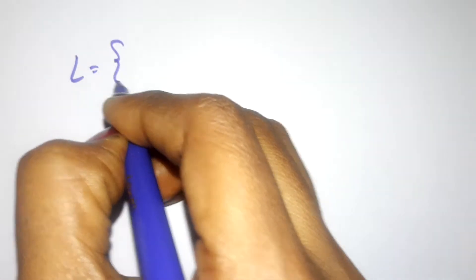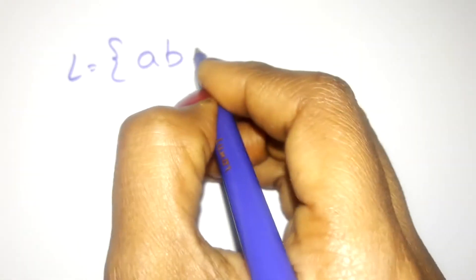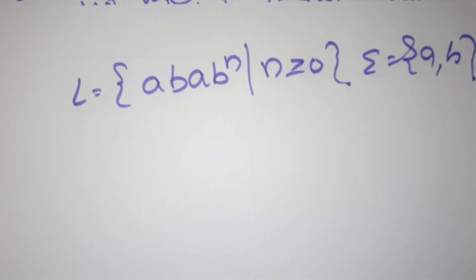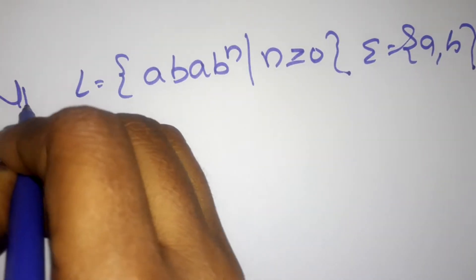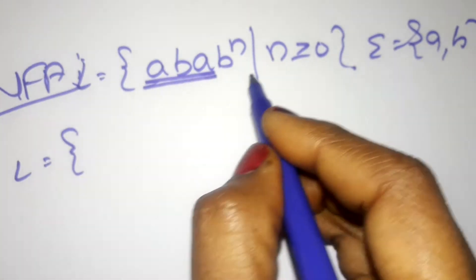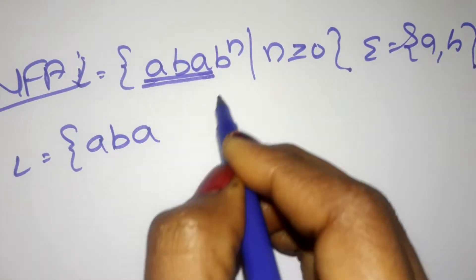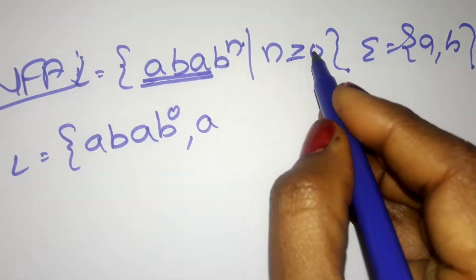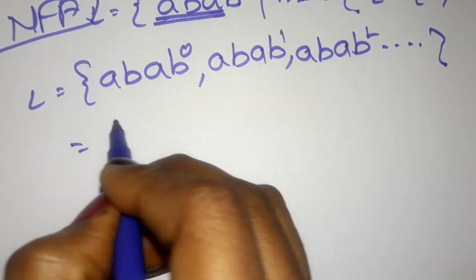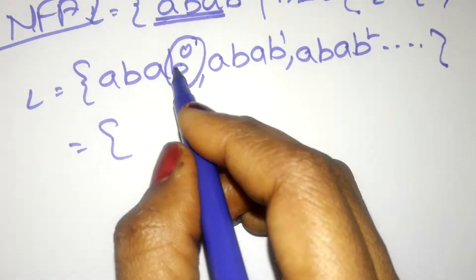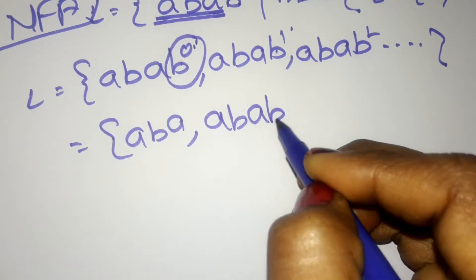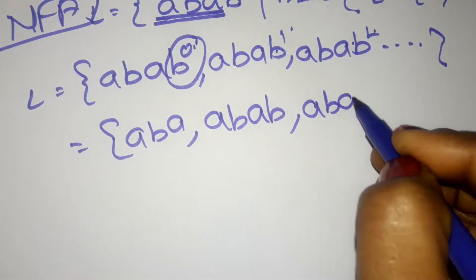We are designing an NFA for the language L = ab(ab)^n where n ≥ 0, and sigma = {a, b}. For n=0, (ab)^0 = epsilon, so the string is 'aba'. For n=1, we get 'abab'. For n=2, we get 'ababb', and so on. Here b^0 means epsilon, which is an empty string; b^1 means b written once; b^2 means b written twice.